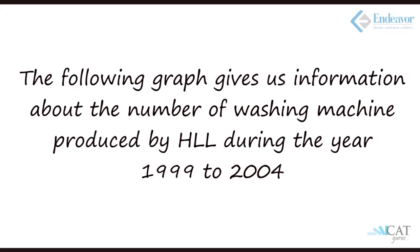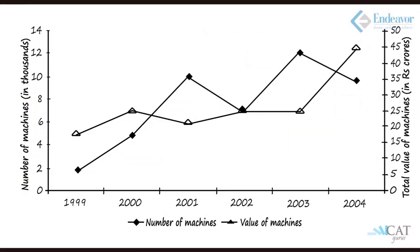Let's look at another type of example. The following graph gives information about the number of washing machines produced by HLL during 1999 to 2004. This is again a line graph but with two separate y-axes — one on the left giving number of machines in thousands, and one on the right giving total value of machines in rupees crores. The gray box represents number of machines compared to the left axis, and transparent triangles represent value of machines compared to the right axis.